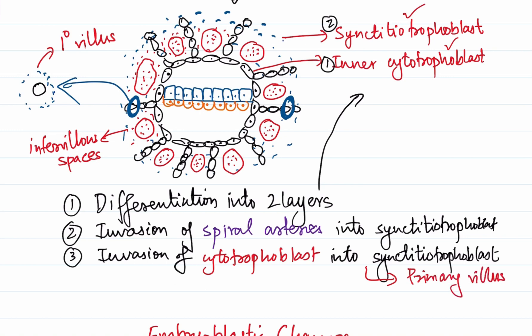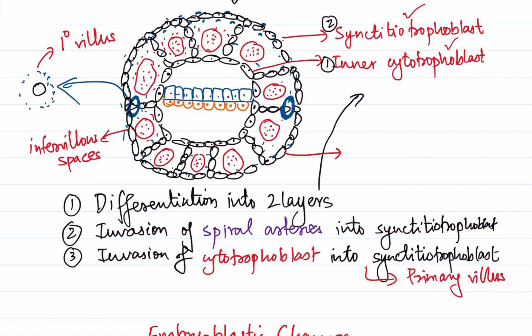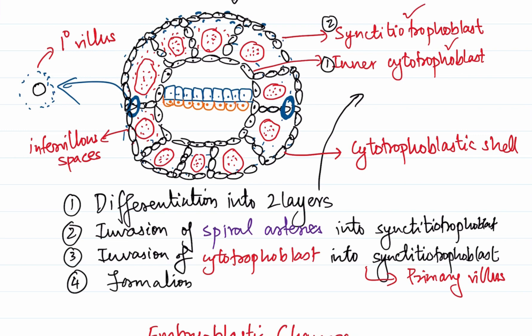After the invasion, the cytotrophoblast will continue to grow into the syncytiotrophoblast and actually form an entire covering or shell over the syncytiotrophoblast. This shell is called the cytotrophoblastic shell. So to summarize: the spiral arteries invade into the syncytiotrophoblast via the lacunar spaces, then the cytotrophoblast invades to form the primary villus, and finally the cytotrophoblast continues to invade and forms the cytotrophoblastic shell.